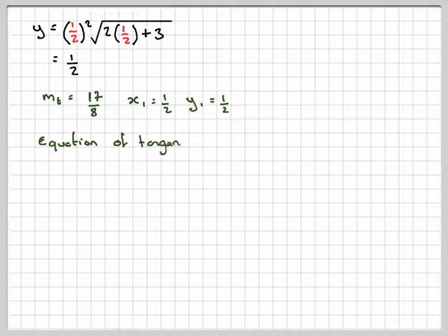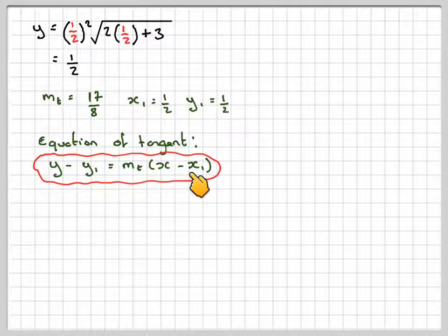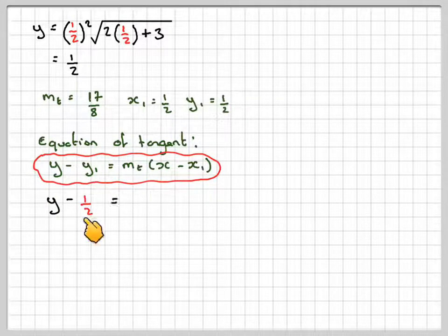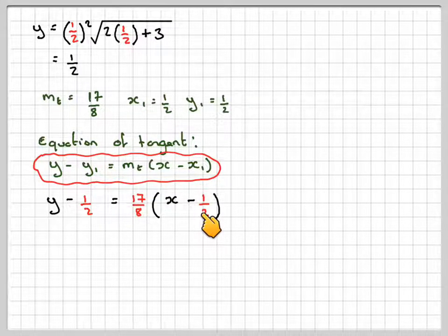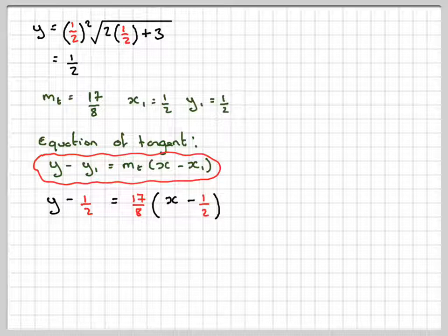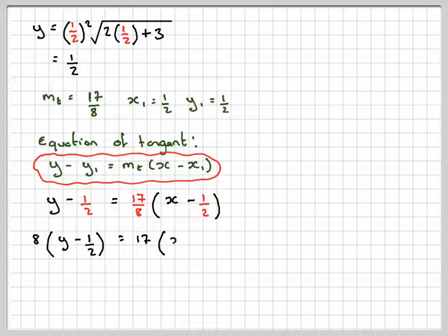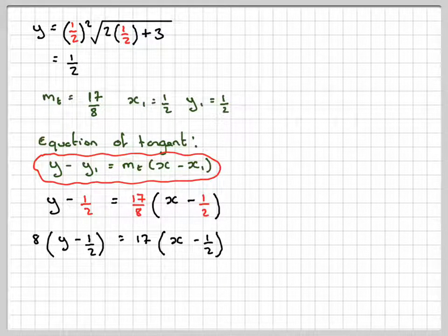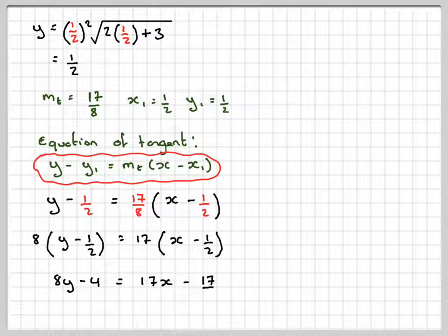Finding the equation of the tangent using y minus y1 equals m times x minus x1, we're going to have y minus a half equals 17 over 8 times x minus a half. Taking 8 up here, we're going to have 8 times y minus a half equals 17 times x minus a half. Expanding the brackets, we've got 8y minus 8 over 2, which is minus 4, equals 17x minus 17 over 2.